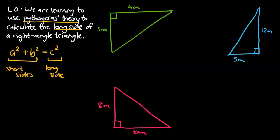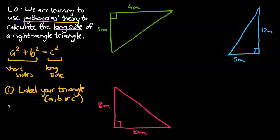To help us get through the first couple of questions, I've got a three-step approach that I need you to write down. First step is you need to label the sides of your triangle — label your triangle with a, b, or c. Once you've done that, hopefully you remember this 's' word from algebra: you need to substitute. And then once you've done that, I'm going to ask you to solve. If you can follow those three steps, you should be able to get into all of the long side questions.